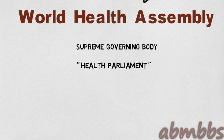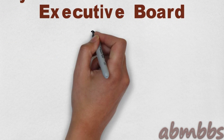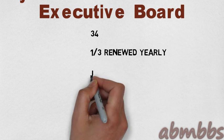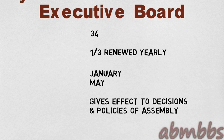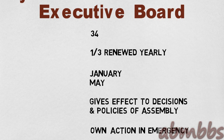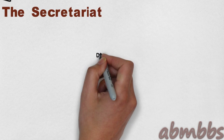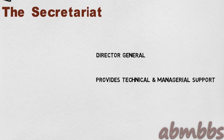The World Health Assembly is also called the Health Parliament. It meets annually, usually in May, in Geneva. The Executive Board consists of 34 members, of which one-third are renewed annually. It meets twice a year, in January and in May. It gives effect to the decisions of the Assembly, but it can also take action itself in case of emergency. The Secretariat is headed by the Director General and provides technical and managerial support to member states.